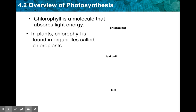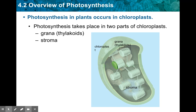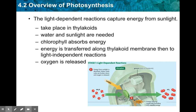In previous units you covered animal versus plant cells and the organelles of a plant cell — that comes up again here. Chlorophyll is a molecule that absorbs light energy, and it is found in chloroplasts. This figure shows what you're actually looking at when you look at a leaf. Photosynthesis takes place in two parts of the chloroplast: the thylakoids and the stroma. The light-dependent reactions take place in the thylakoids, and the light-independent reactions take place in the stroma.